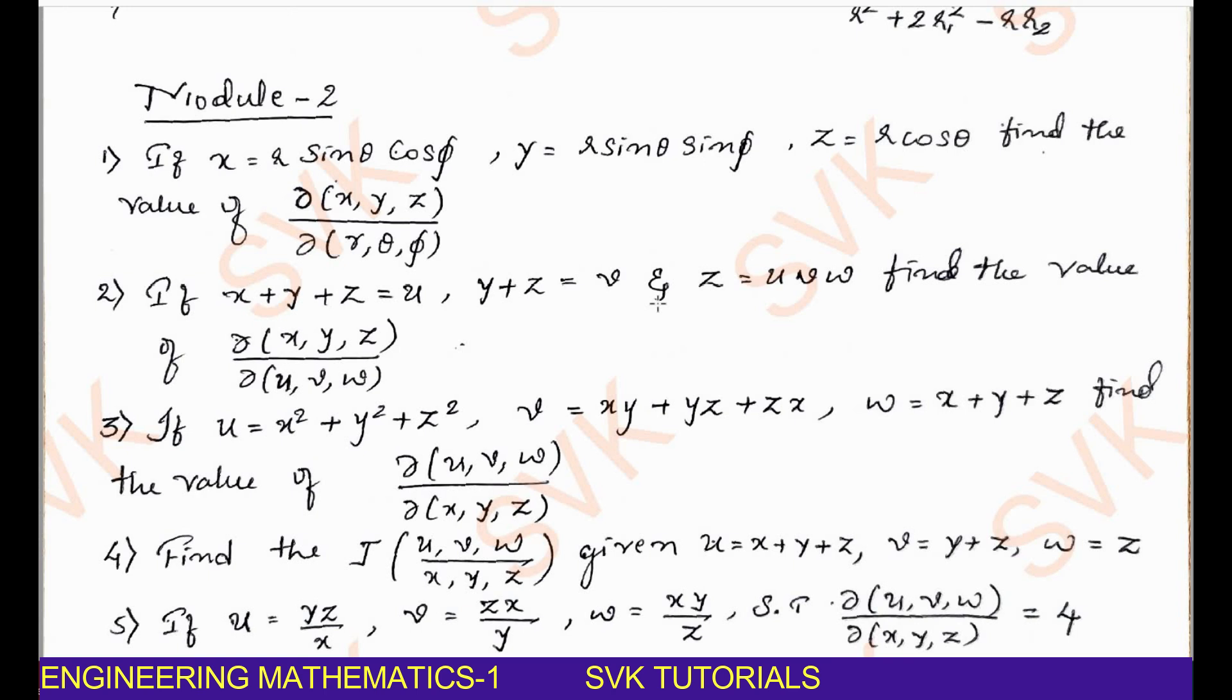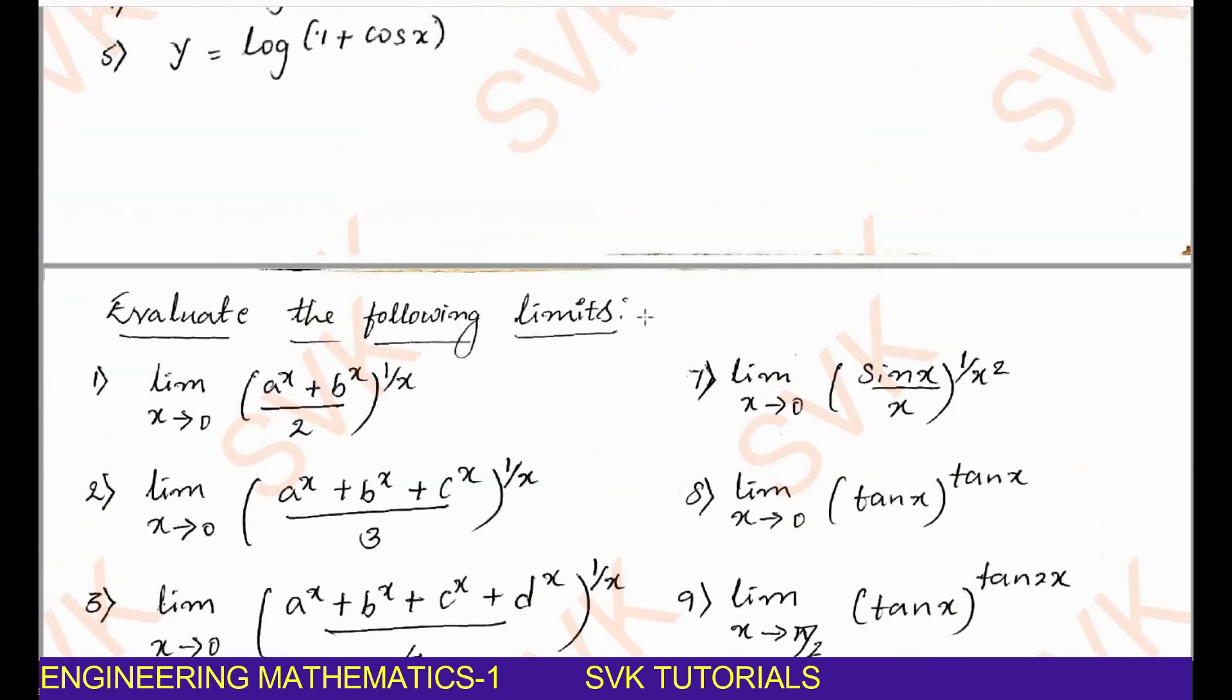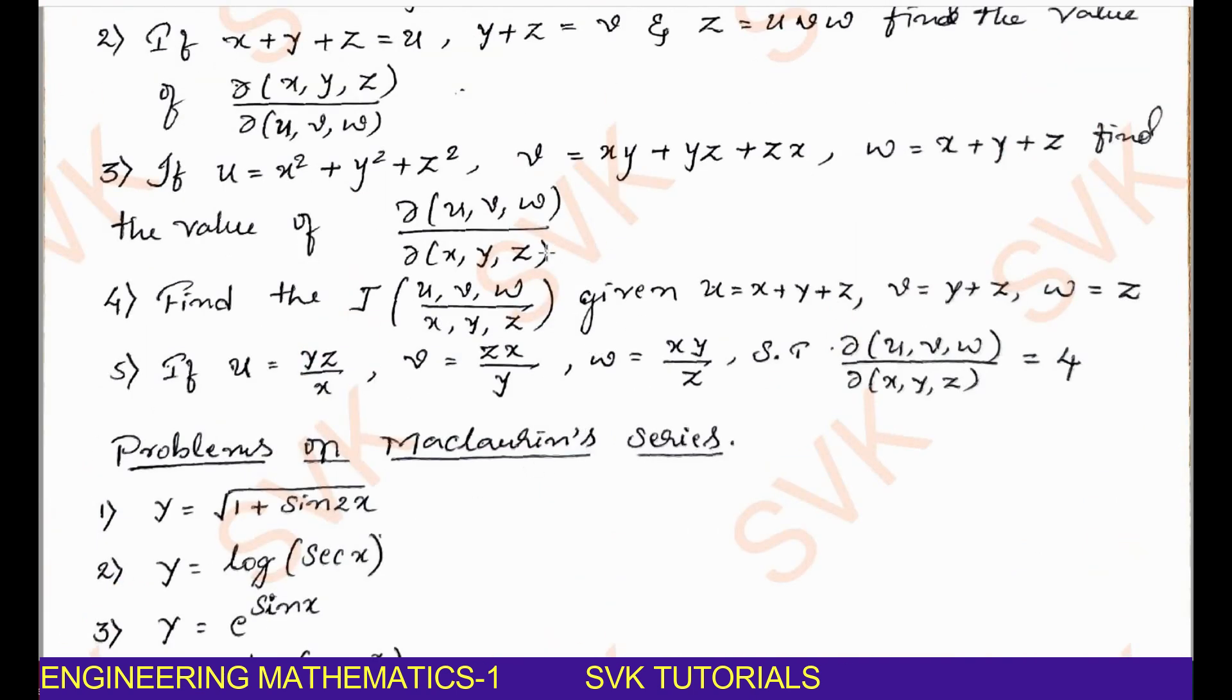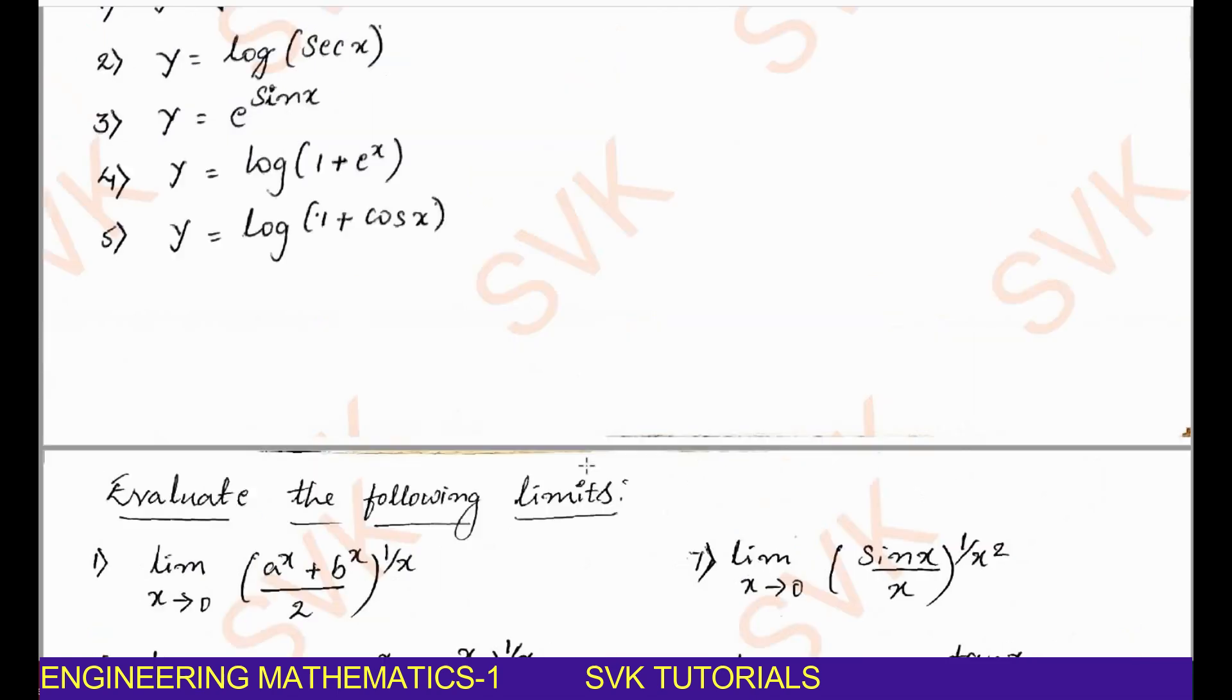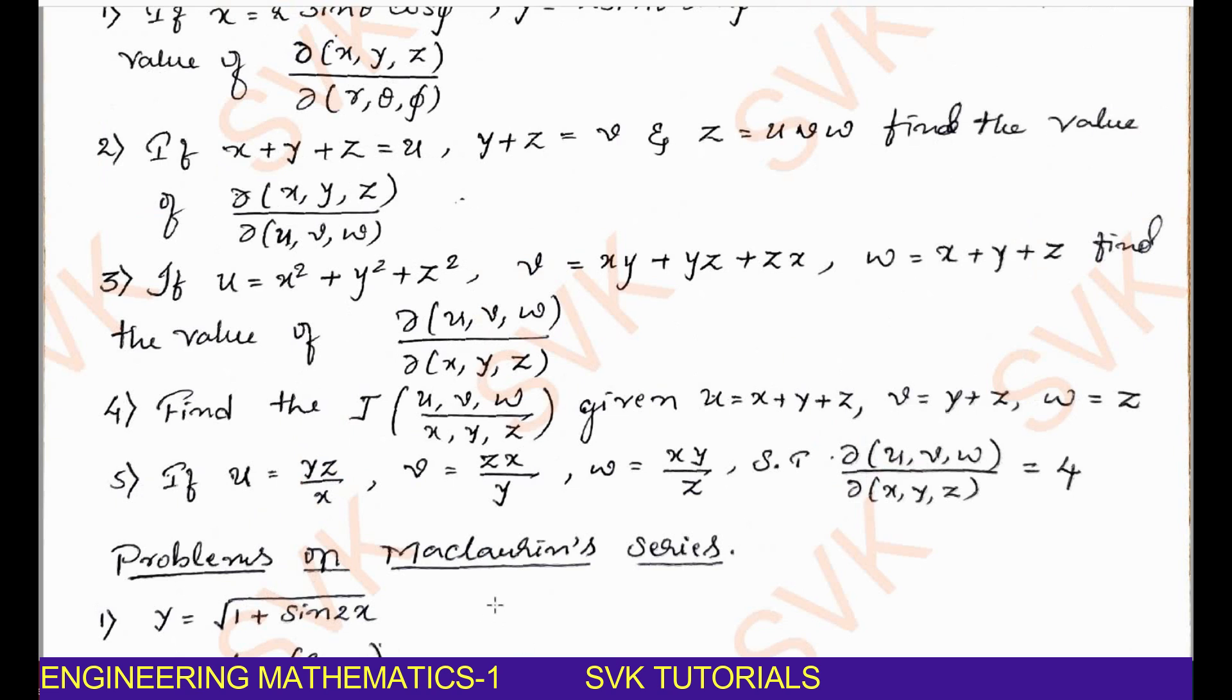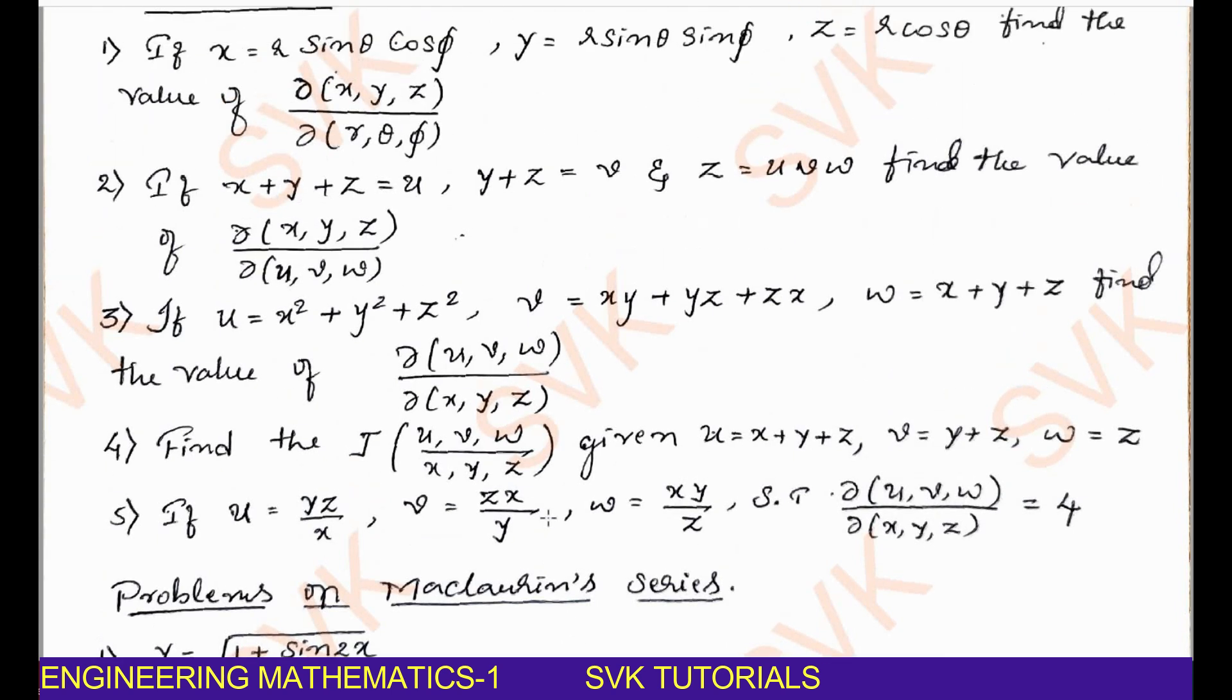Moving on to module 2, I have considered 3 topics in this module. One is Jacobian, one is McLaren series and another one is L'Hopital rule. Out of these 3 topics, if you study these 2 topics that is Jacobian and McLaren series or go with another combination, Jacobian and L'Hopital rule, definitely you can score 12 marks. Out of these choice, definitely 2 questions will be there. With Jacobian, there will be 2 choice that is McLaren series and L'Hopital rule. That is why I have made a choice for you. You can go through whichever topic is comfortable for you. Go through that topic and study well for your examination.